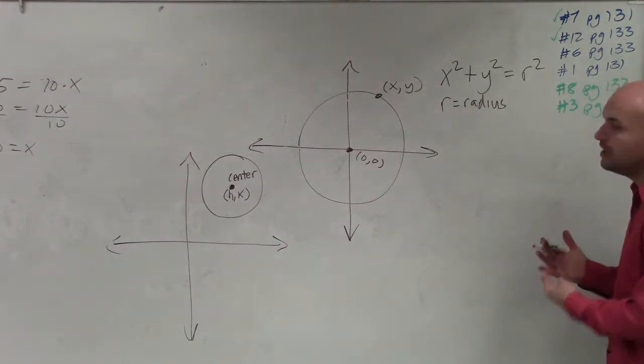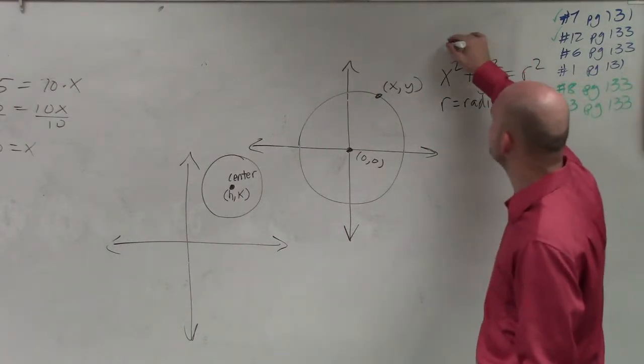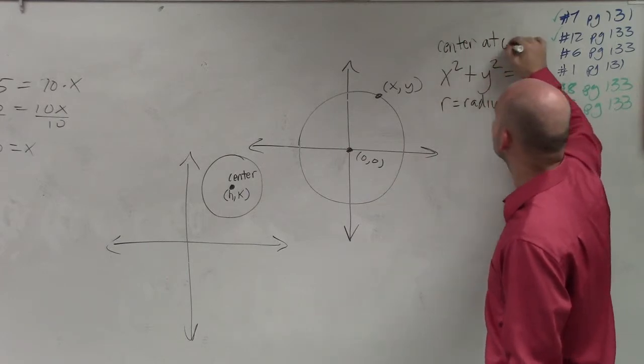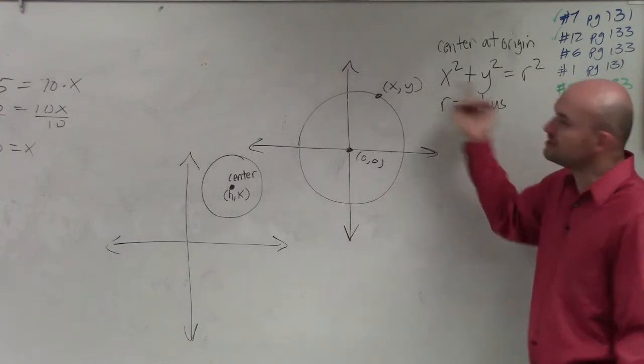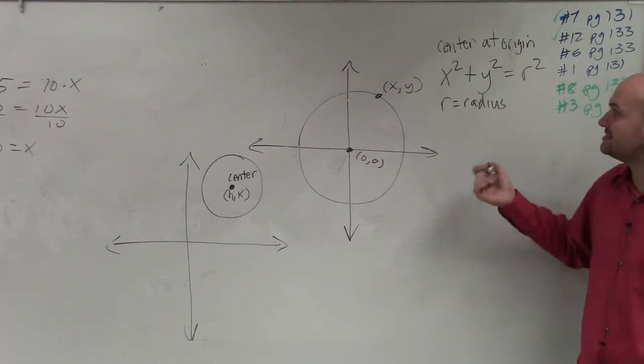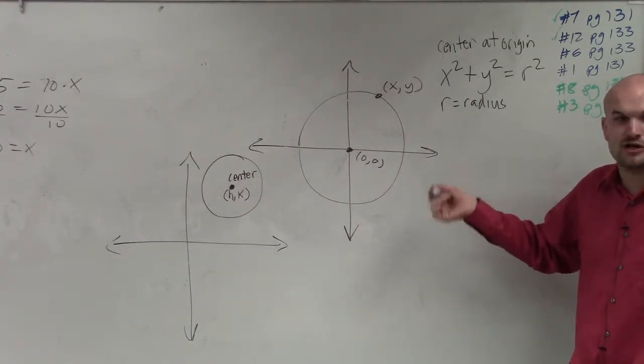So the equation of a circle, when it's the center, this is the center at the origin. If the center is not at the origin, and notice, guys, really the formula is the same thing. Is that when it's at the origin, h and k are 0 and 0, right?